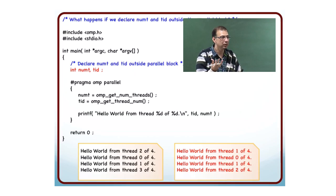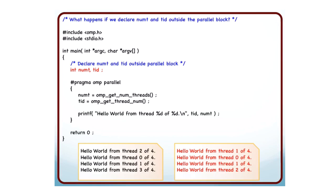Correct. Now, this is a shared variable - numt and tid are now shared variables. So what happened in this particular case?